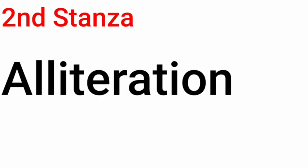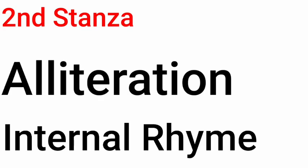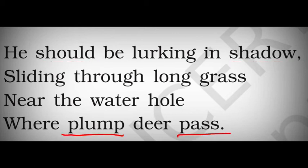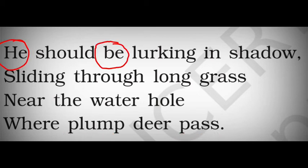In stanza two, alliteration and internal rhyme are used. Examples of alliteration: 'should' and 'shadow' — the SH sound is repeated; 'plump' and 'pass' — the P consonant sound is repeated. For internal rhyme, in the first line 'he' and 'be' are rhyming with each other — so there is internal rhyme.